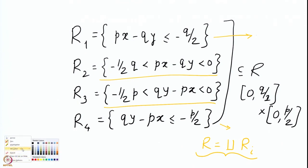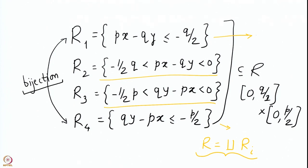We also saw in the previous lecture that the number of lattice points in R1 is equal to the number of lattice points in R4. So there is a bijection between the sets of lattice points in these 2 parts. Therefore, when counting lattice points in R2 and R3, to get the total in R, we add twice the number of lattice points in R1, since R1 and R4 have equal counts. So a multiple of 2 needs to be added.